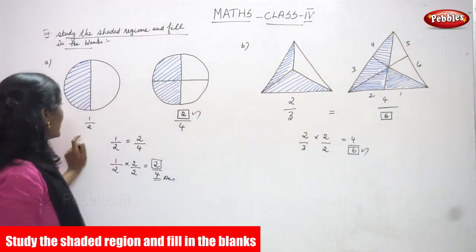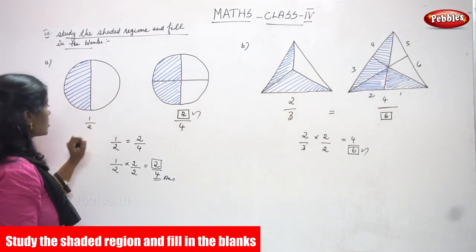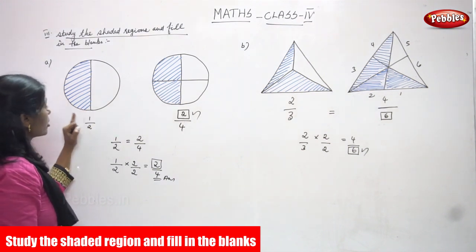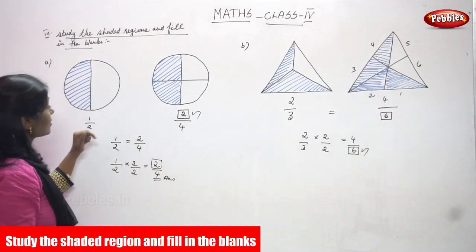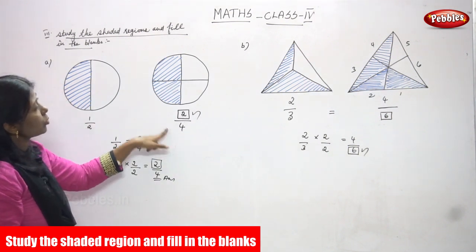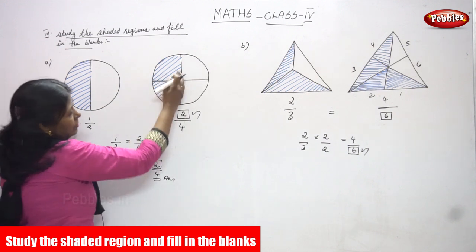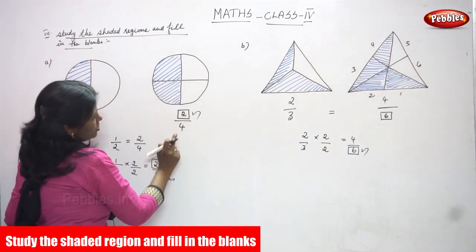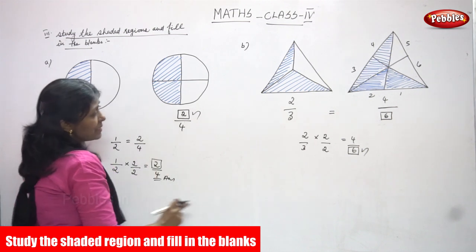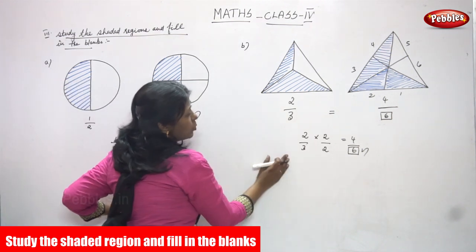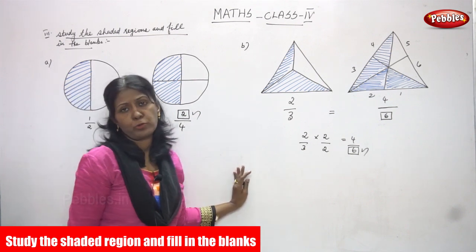I also represent this in the diagrams. The first circle has two equal parts with one shaded. The same circle cut into four equal parts has two shaded. Both sums are equal as fractions and also shown in the diagrams.